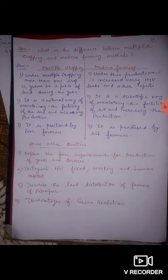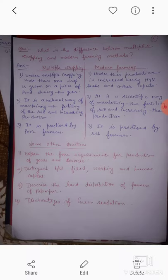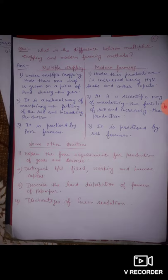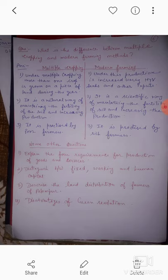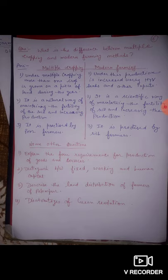Now the second question is: distinguish between fixed capital, working capital, and human capital. We have done their definitions, so we can explain their definitions and solve this question. The third question is: describe the land distribution of farmers of Palampur — this is also done.